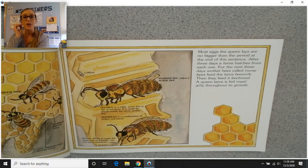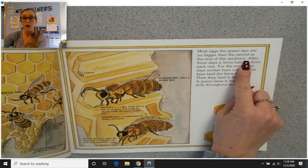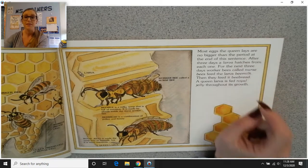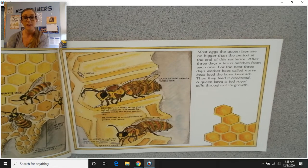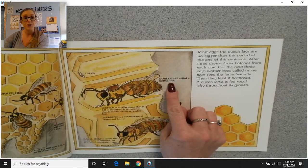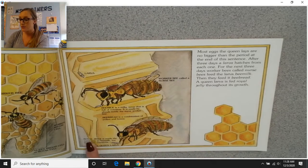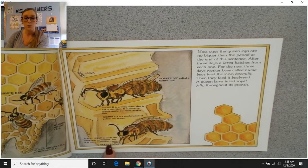Most eggs the queen lays are no bigger than the period at the end of a sentence. After three days, a larva hatches from each one. For the next three days, worker bees called nurse bees feed the larva bee milk, then they feed it bee bread. A queen larva is fed royal jelly throughout its growth. Here's the larva, the nurse bee, the royal jelly, the bee milk, the bee bread, and the queen larva.